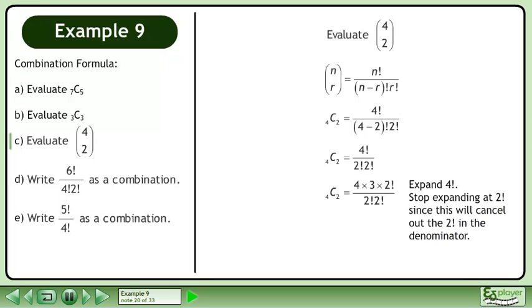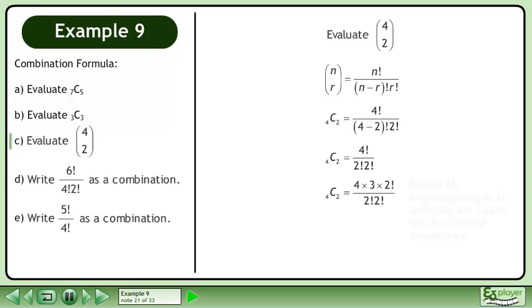Rewrite the combination formula. 2 factorial is 2. The answer is 6.